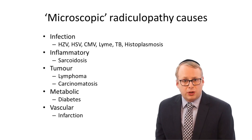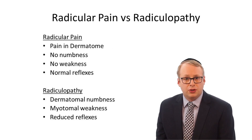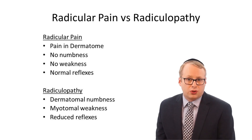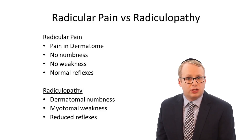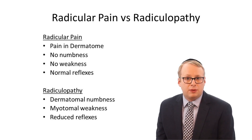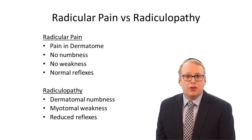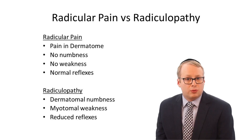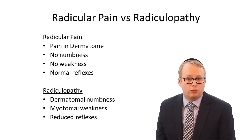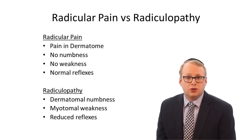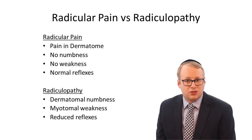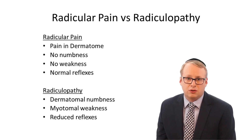It's worth explaining that nerve root pain which is referred is known as radicular pain, and is different from radiculopathy. Radicular pain radiates along the course of the nerve root without neurological impairment. Radiculopathy, in contrast, means an impairment of the nerve root's function, leading to dermatomal sensory deficit and/or myotomal muscle weakness and diminished reflexes. Whilst the two often coexist, this is not always the case, and the two can occur in isolation.